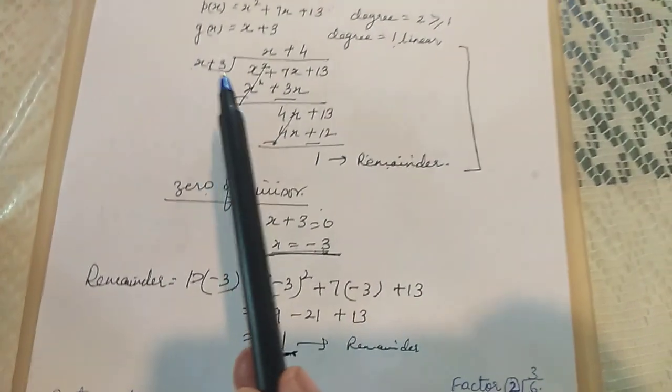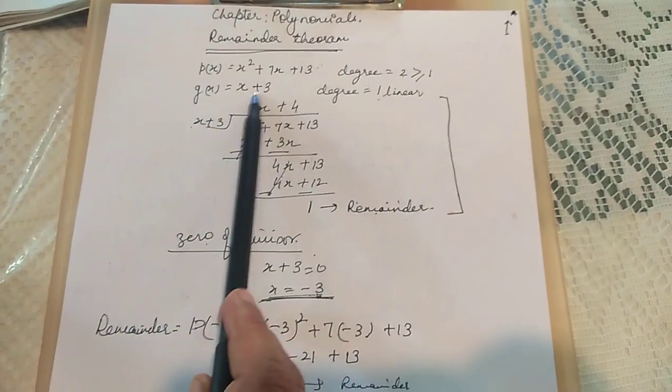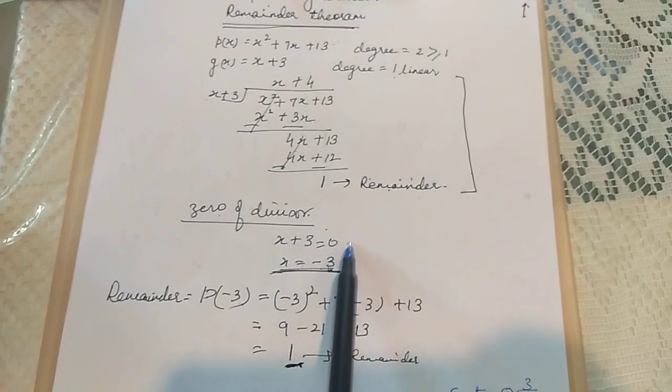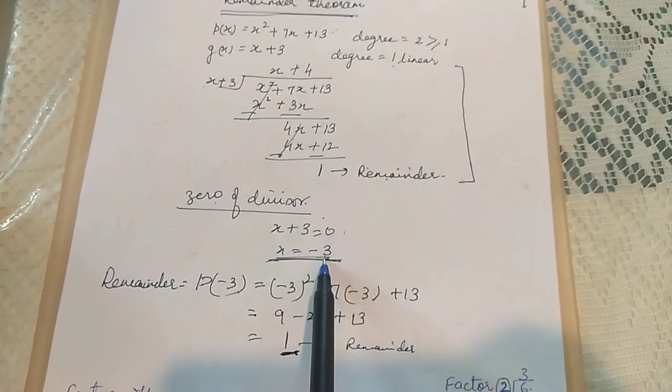In this method what we do is we find the zero of the divisor. You know how to find the zero of the divisor? We put the divisor equal to 0. The value of x comes out to be -3.